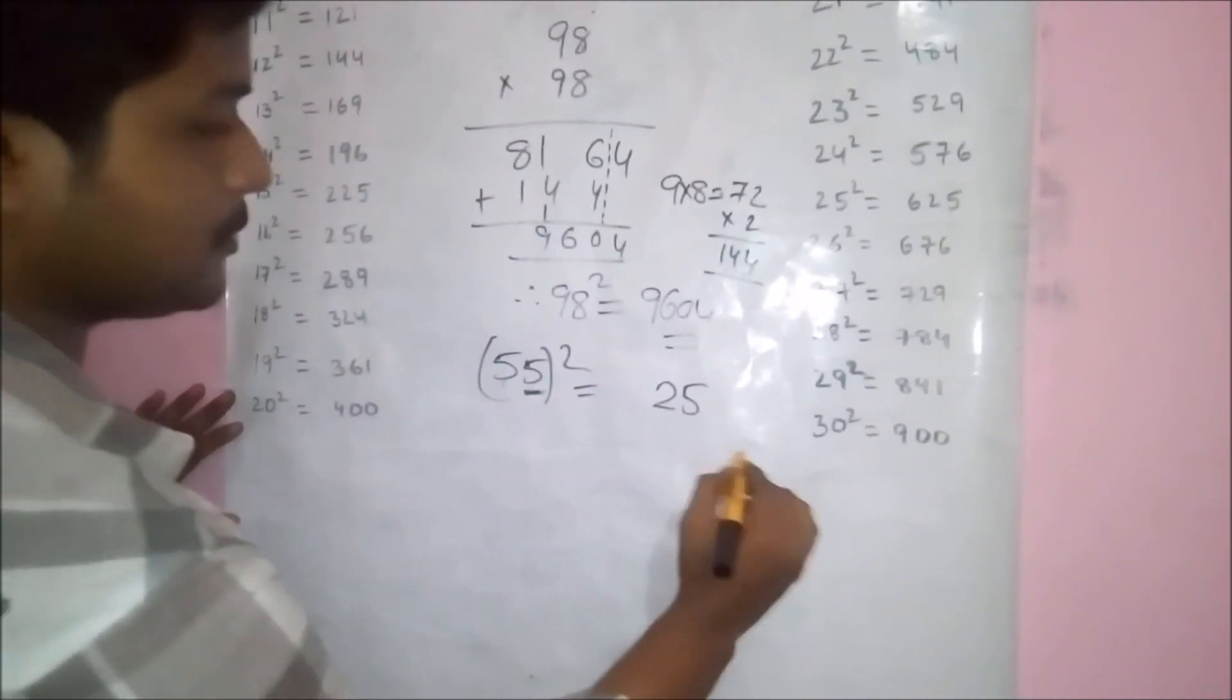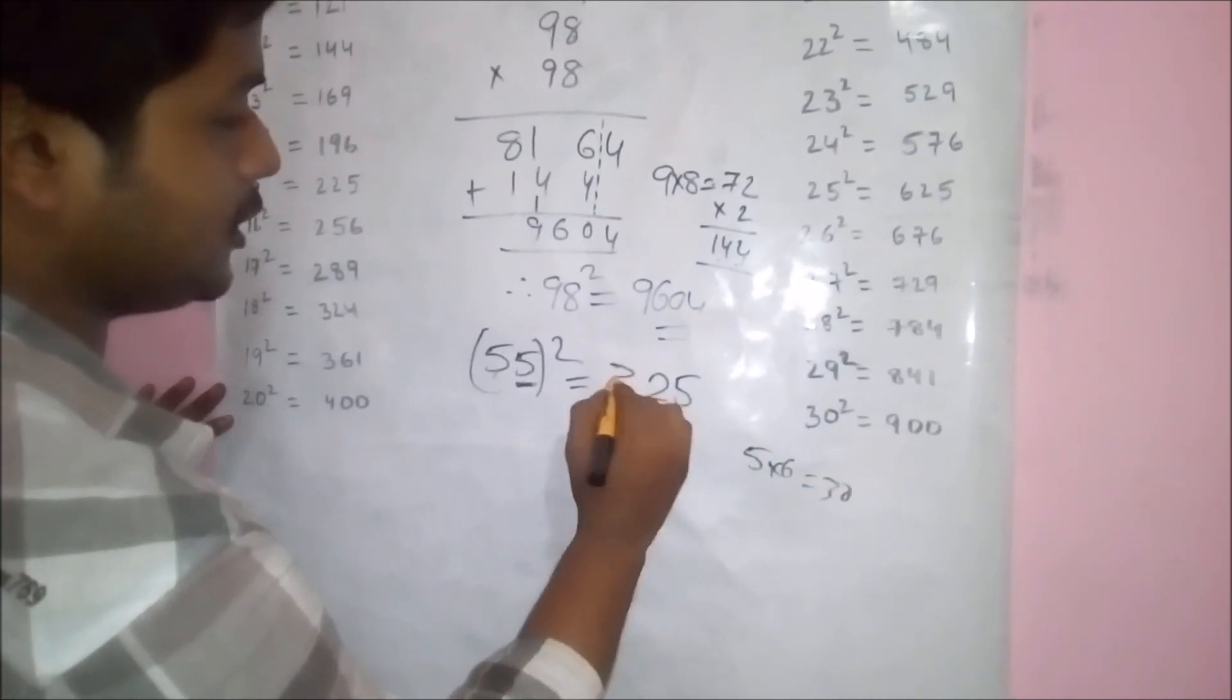5 consecutive number is 6. That means multiply them. 5 into 6 becomes 30. That means 3025.